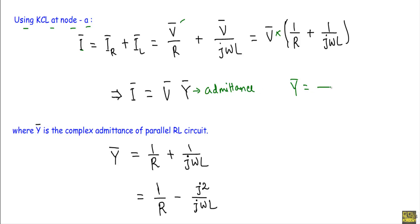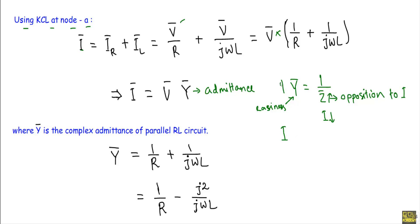Admittance Y is the reciprocal of the impedance. Impedance indicates opposition to current flow — the higher the impedance, the lower the current. Admittance indicates how easily current can flow through a circuit. The higher the admittance, the higher the current. We express 1/R plus 1/jωL with the variable Y — that is the complex admittance of the parallel RL circuit.